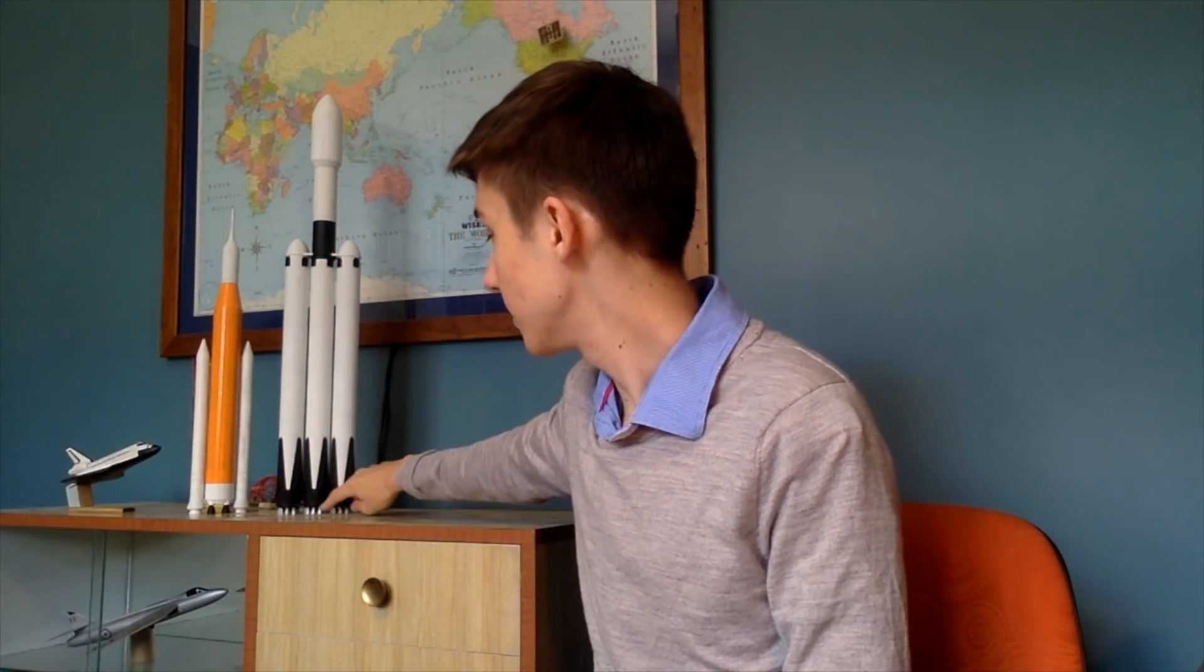This is a model of the SpaceX Falcon Heavy, and you can see it's made up of smaller rockets. There's two boosters on the side here, there's one stage in the middle, and then there's another stage on the top, and then the payload fairing on the very top, which would house the satellite inside it. That's quite a complicated example because it's got them on the side and on the top there.